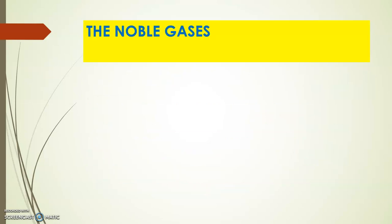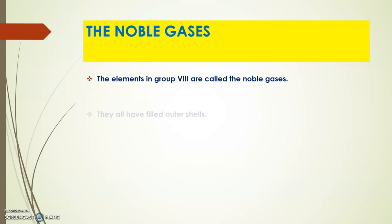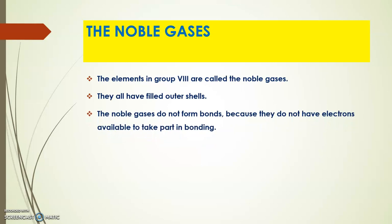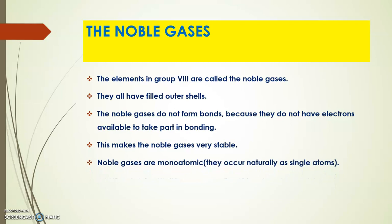How about noble gases? Noble gases are actually the elements in group 8. Those elements that are in group 8 are called noble gases. They all have filled outer shells. They have the maximum of 8 electrons. Noble gases do not form bonds because they do not have electrons available to take part in bonding. This makes the noble gases very stable. Noble gases are monoatomic — they are naturally a single atom.